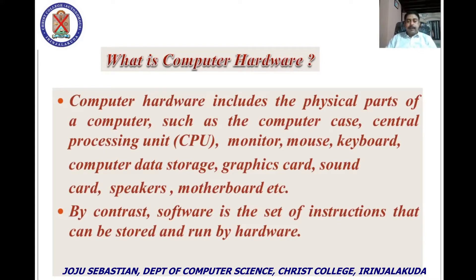Now let us discuss computer hardware. Computer hardware includes the physical parts of a computer, such as the computer case, central processing unit, monitor, mouse, keyboard, computer data storage like hard disk, random access memory, graphics card, sound card, speakers, motherboard, etc. By contrast, software is the set of instructions that can be stored and run by hardware.